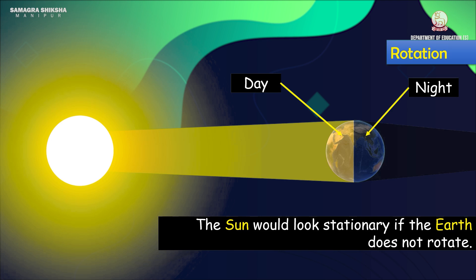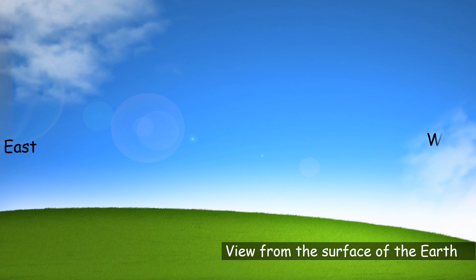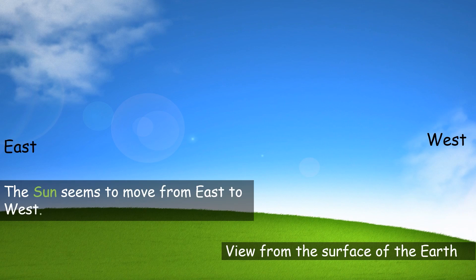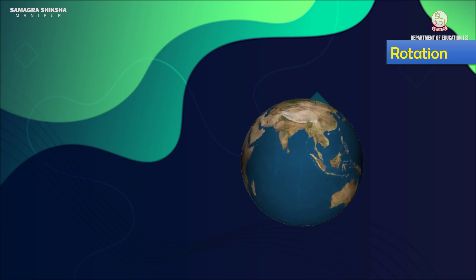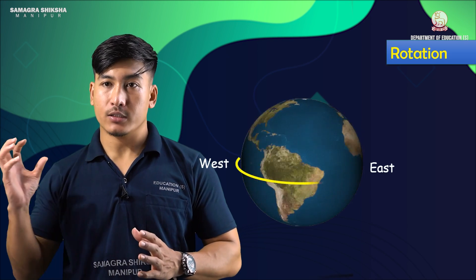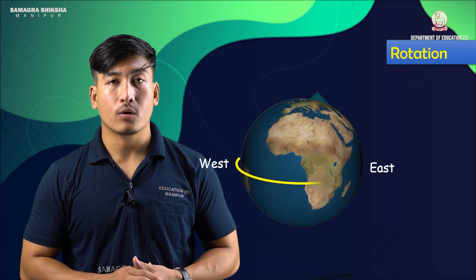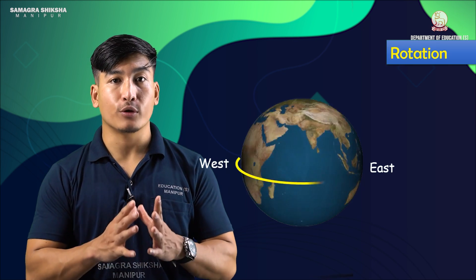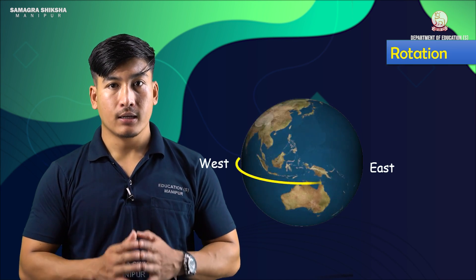The sun seems to move from east to west, but the sun does not move at all. It seems to move from east to west because the earth rotates from west to east — just like trees and houses that seem to move in the opposite direction when you are in a moving bus or train. This is actually an optical illusion.